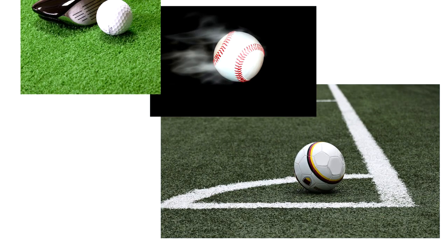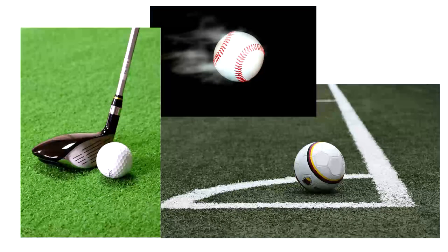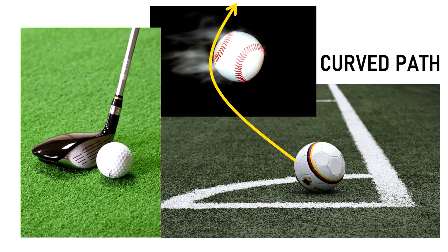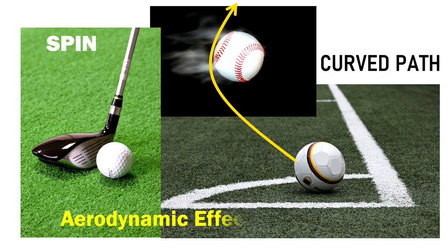There are many instances where a football, a baseball, or a golf ball takes a curved path after it is kicked, thrown, or hit in a particular manner. This curved path is because of a particular spin that is given on the ball and an aerodynamic effect around the ball because of the spin.